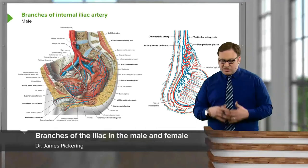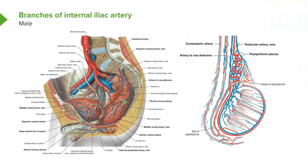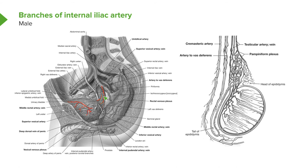Now let's move on to the individual branches in the male and female. In this diagram we can see the bladder, the seminal vesicles, and the vas deferens. Running alongside the vas deferens is the artery to the vas deferens, specifically found in the male. We can see superior vesical arteries supplying the superior aspect of the bladder, and inferior vesical arteries supplying the base of the bladder and giving prostatic branches to the prostate.